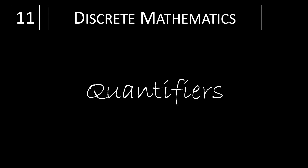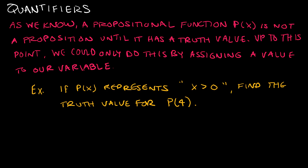This video should be a great introduction to quantifiers in predicate logic. A propositional function p of x is not considered a proposition until it has a truth value. Up to this point, the only thing we knew how to do is to assign a value to our variable. So for instance, if p of x represented x is greater than 0, then I could give it a truth value by assigning some value to x — for example, 4 is greater than 0, which is true.